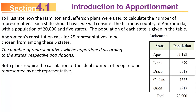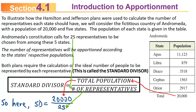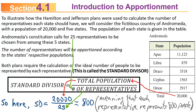Both the Hamilton and Jefferson plans require calculating the ideal number of people represented by each representative. To do that, you divide to get something called the standard divisor. The standard divisor is the total population divided by the number of representatives you want. In this case, 20,000 divided by 25 is 800. So ideally, you would have 800 people represented by each representative — that's an ideal you're probably not going to hit exactly.